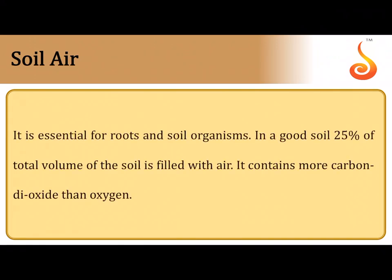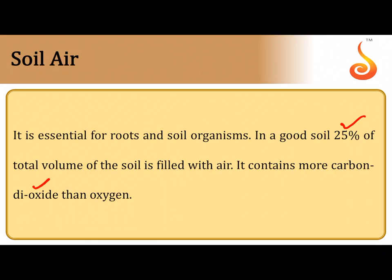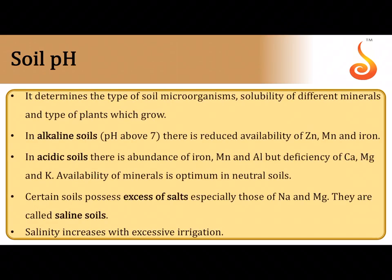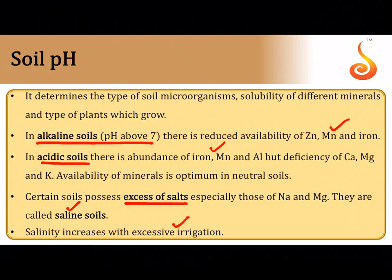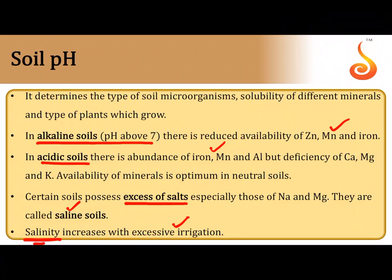Soil air is the oxygen trapped in the soil — in good soil about 25% of total volume should be filled with air, containing more CO₂ than O₂ since it is less directly in contact with the surface atmosphere. Roots respire aerobically so they need a lot of oxygen. Soil pH: in alkaline soils (pH > 7) there is reduced availability of zinc, manganese, and iron; in acidic soils there is abundance of iron, manganese, and aluminium but deficiency of calcium, magnesium, and potassium. Saline soils have excess sodium and magnesium; excessive irrigation can cause water to stand on soil, extract salts, and form a thin crust of salt increasing soil salinity.